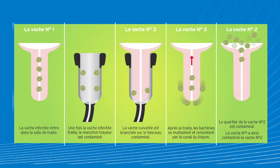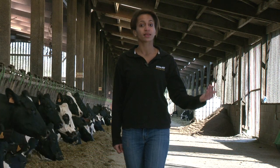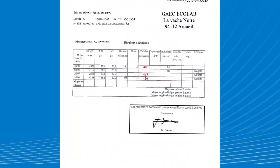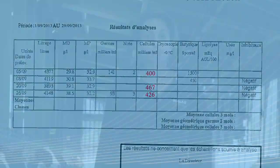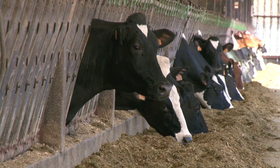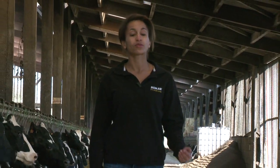Pathogens that live on the cow's teats are mainly responsible for causing contagious mastitis. In order to identify subclinical mastitis in a cow, you will need to check the cow's individual somatic cell count. The priority in order to prevent this kind of mastitis is hygiene in and around the milking parlour.